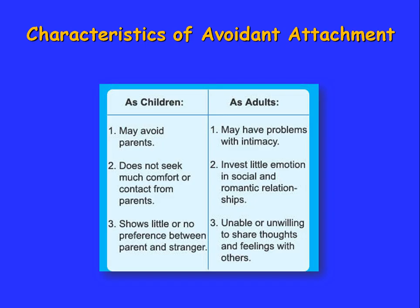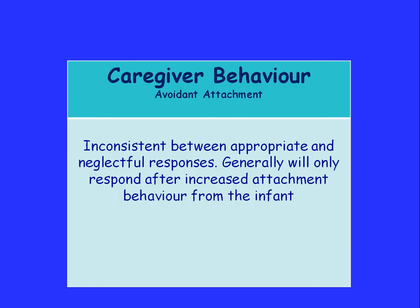With avoidant attachment, as children we may avoid our parents, which can mean as adults we have problems with intimacy. We don't seek much comfort or contact from parents, and as adults we may invest little emotion in social or romantic relationships. As children we may show little or no preference between a parent and a stranger, which can lead as adults to being unable or unwilling to share thoughts and feelings with others. The caregiver behaviour generating avoidant attachment is inconsistent — alternating between appropriate and neglectful responses — and generally only responding after increased attachment behaviour from the infant, such as a child begging for care or chasing the caregiver.